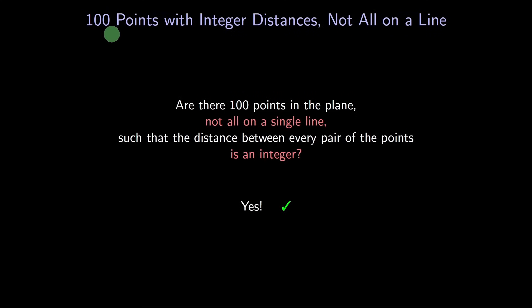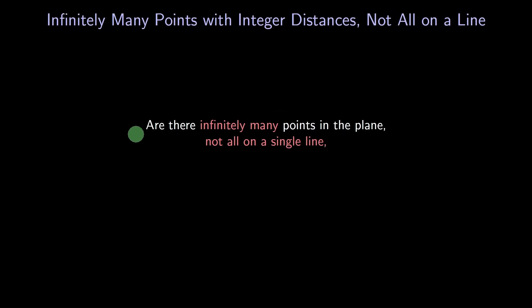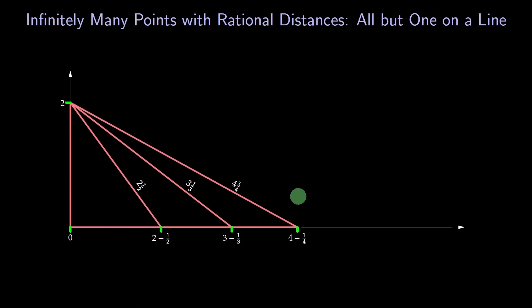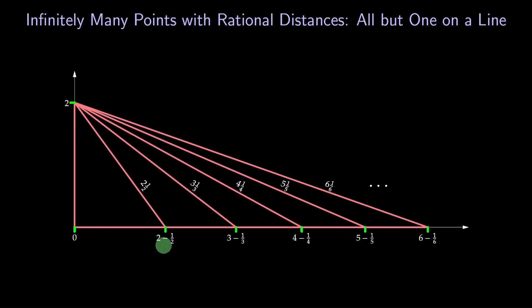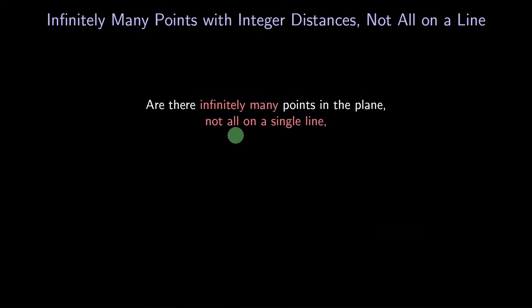How about an infinite number of points? Are there infinitely many points, not all on the same line, so that every distance is an integer? Let's start with our infinite example for rational numbers. Is there a way to convert these rational numbers to integers? All we have to do is multiply by a big number. But which number? It needs to be a multiple of 2, 3, 4, 5, 6, and on and on. But no positive number is a multiple of all those numbers. Our example seems to fail. We seem to have hit a dead end. Now what? What do you think? Believe it or not, the answer is no.